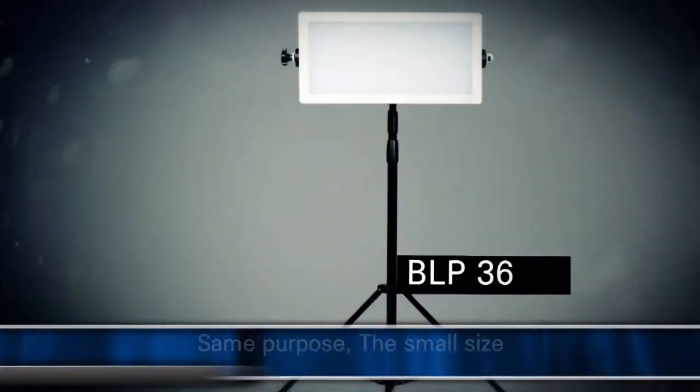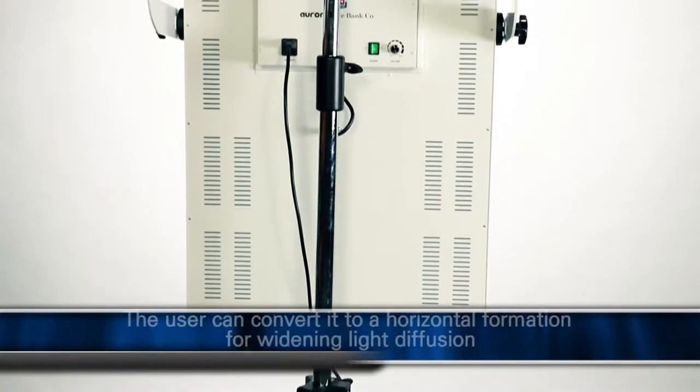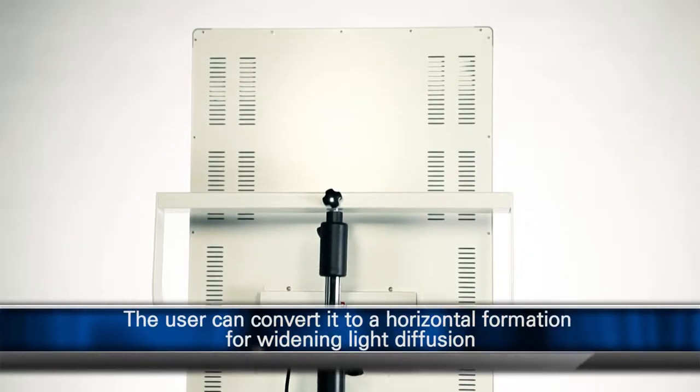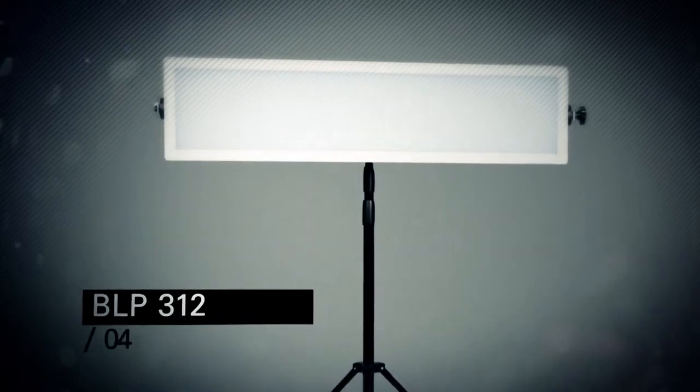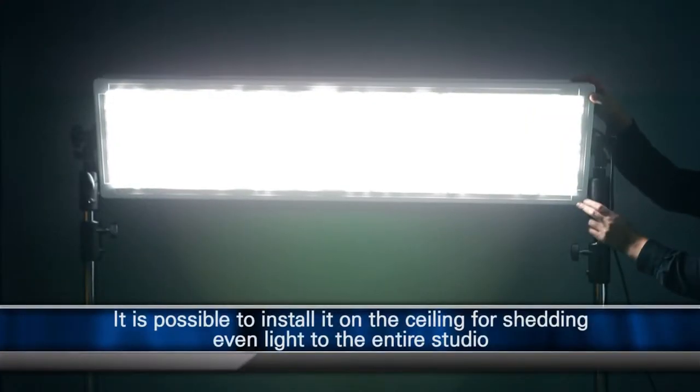BLP 66 is mainly used as a key light and fill light. BLP 612 is mainly used as a fill light in fashion, portrait, and baby photography. BLP 312 is mainly used as a key light in fashion and portrait photography.